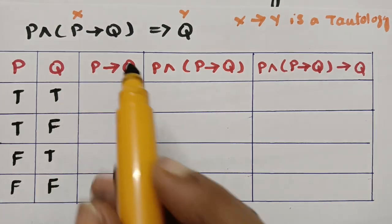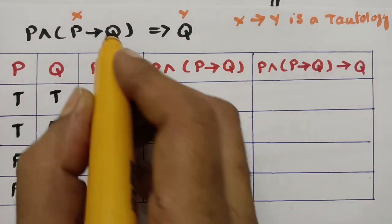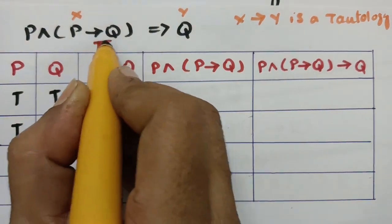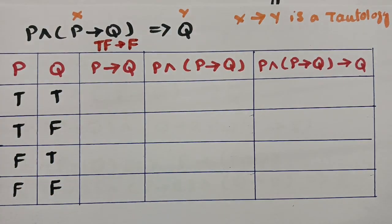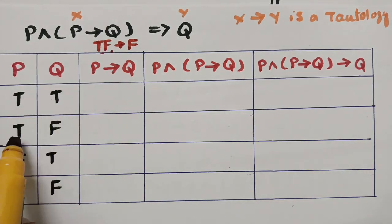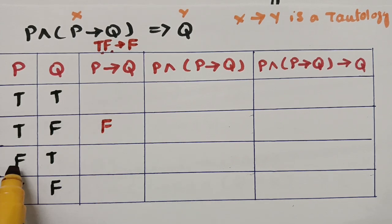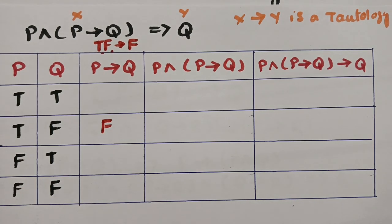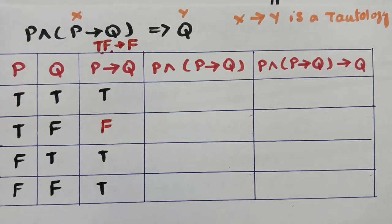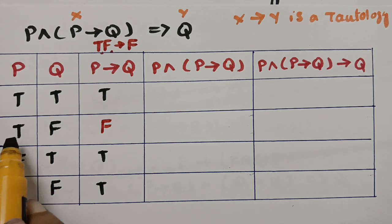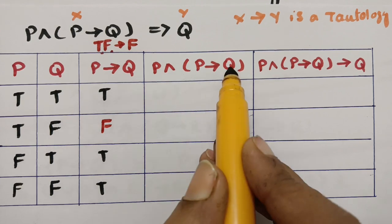For implication, there is only one logic to remember: true implies false gives false. So checking p→q: is there any true-false pair? Yes, there is one true-false — write false. The remaining entries are all true. For p∧(p→q), and the logic for conjunction: if there are two trues, write one true.